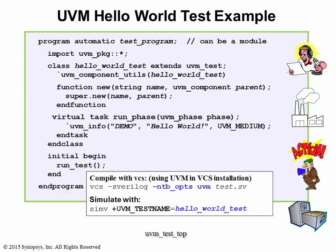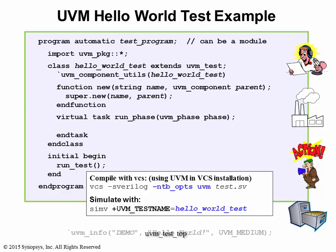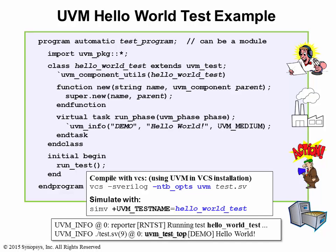UVMroot then executes the RunPhase method of the test at simulation time 0. The `uvm_info macro inside the RunPhase method uses the UVM report server to print the message. Notice the name of the object issuing the message is called UVM_TestTop — this is the name of the test object.